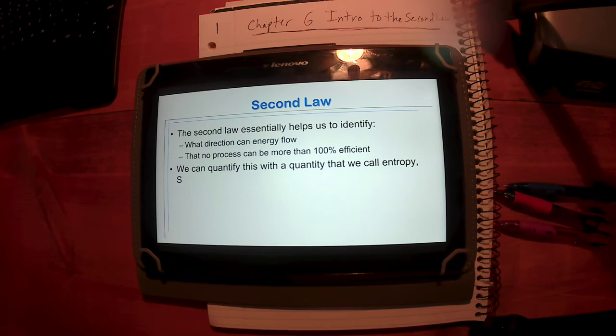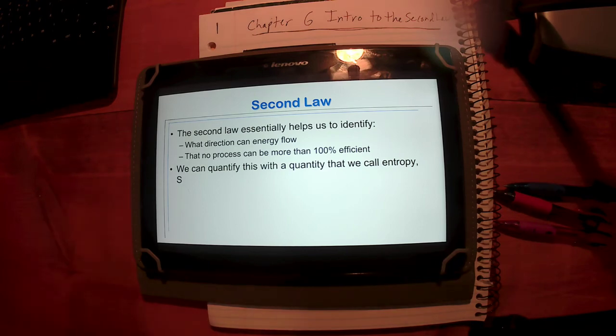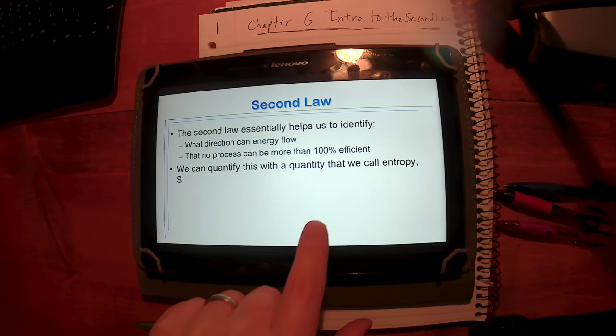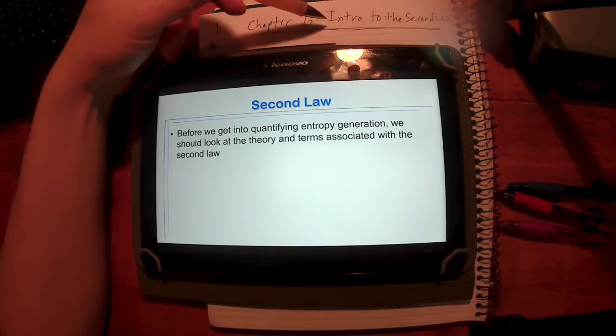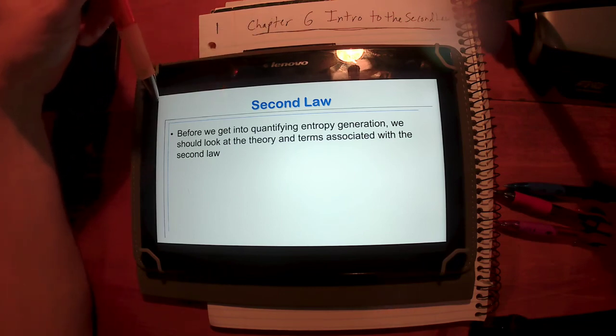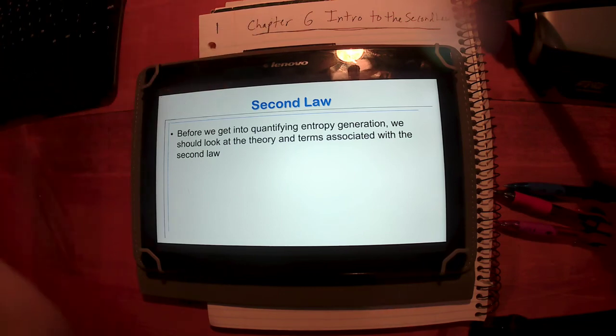It tells us that it sets a limit. Everything's going to be this amount or less, or this amount or more. It tells us we can't have anything more than 100 percent. In fact, most things are not even 100, there's much lower limits placed on us. We quantify all this with a quantity, again, we call entropy, that's the capital S there. Again, the intro to the second law, let's worry about entropy soon.